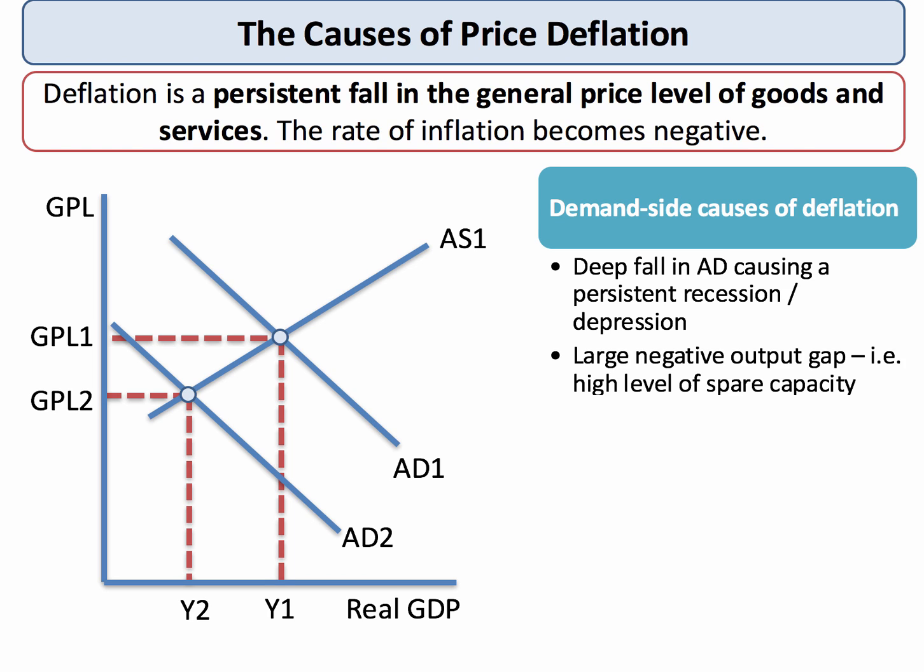Here's an example of demand-pull deflation. In the diagram we can see a significant inward shift of aggregate demand, which brings you down the aggregate supply curve so supply contracts, and there is deflationary pressure on the general price level.